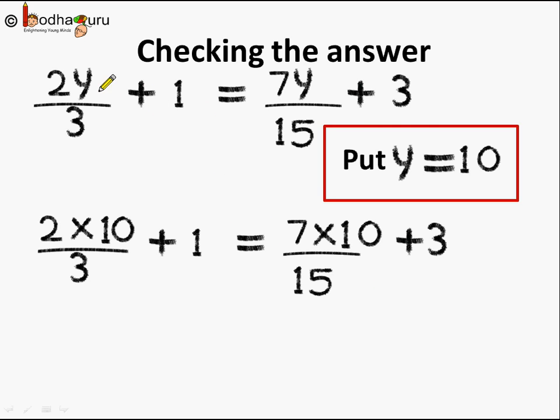So instead of y we write 10. So 2 multiplied by 10. When it is 2y it actually means it is 2 multiplied by y. So 2 into 10 by 3 plus 1 is equal to 7 multiplied by 10 divided by 15 plus 3.